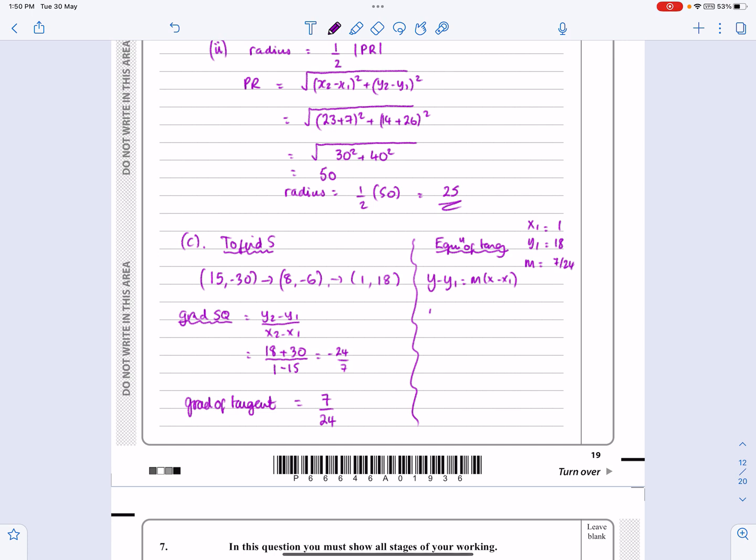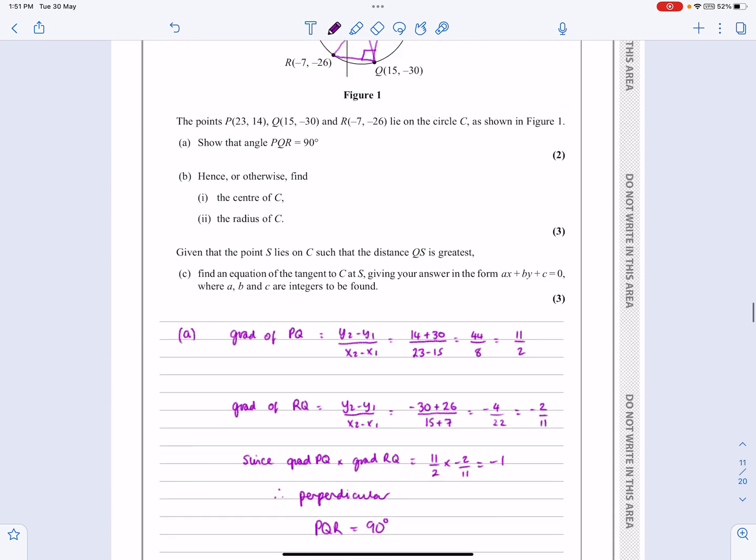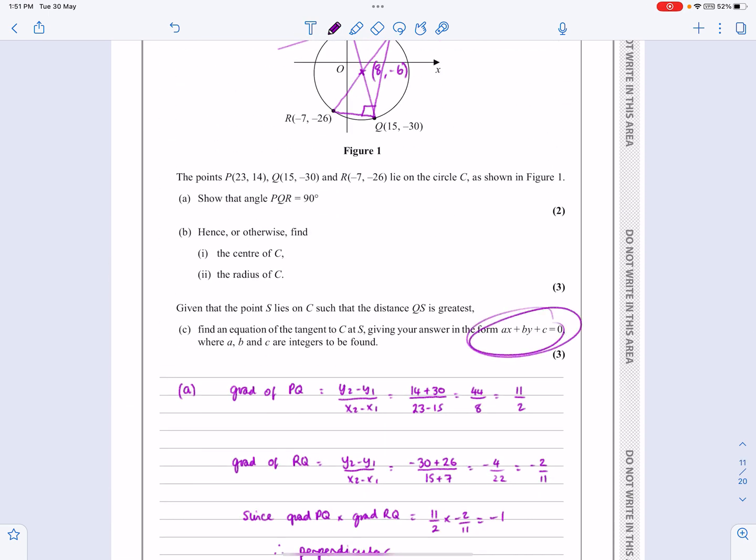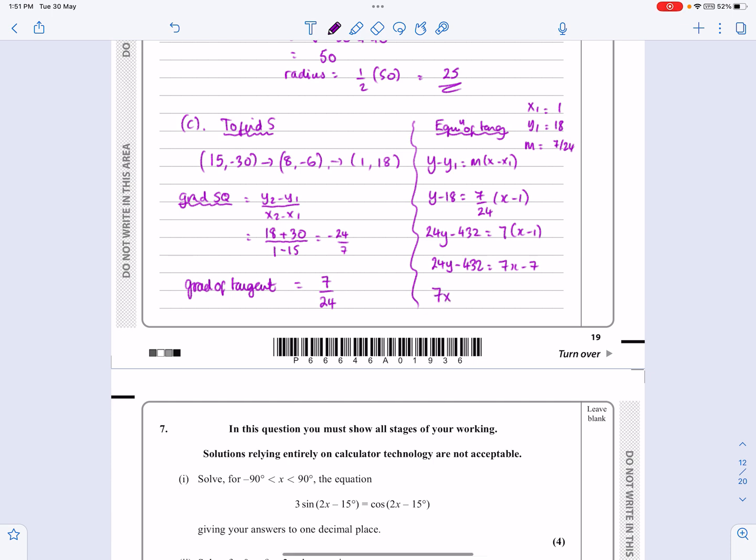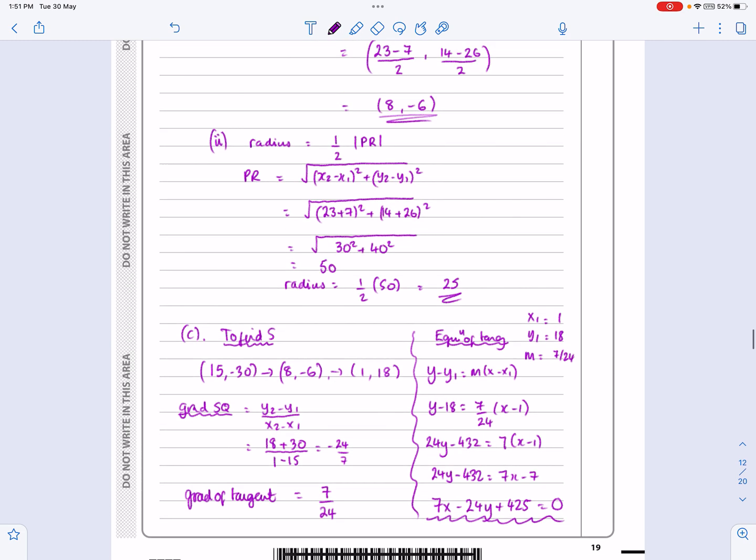So just chuck everything into that formula. So I'm going to get Y minus 18 is equal to 7 over 24 times X minus 1. And at this stage, always do the same thing. Just multiply by that 24. Don't mess around with anything. We're going to get 24Y minus 432 is equal to 7X minus 7. Did they say anything about how they wanted it? Yeah. Giving the equation in the form AX plus BY plus C equals naught. So tidying that up is going to be 7X minus 24Y plus 425 equals naught. So hopefully that all makes sense for that question.